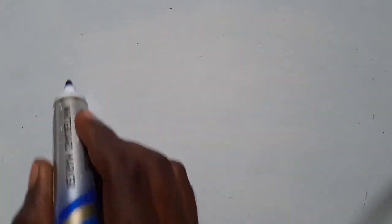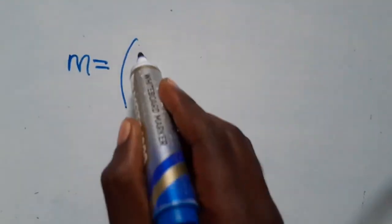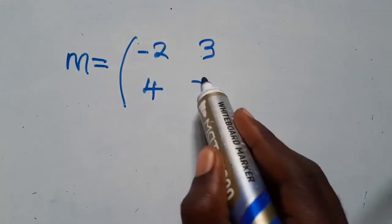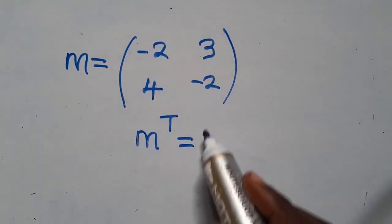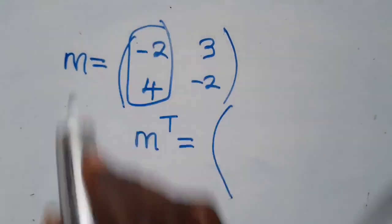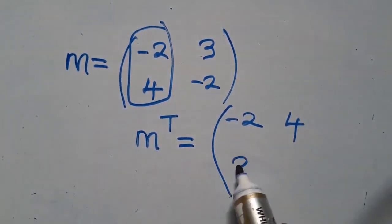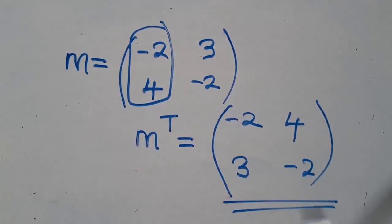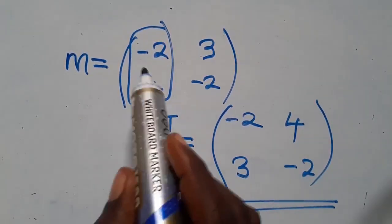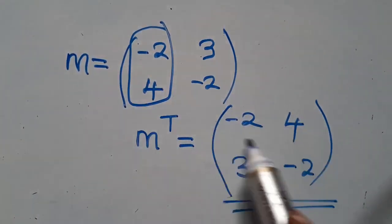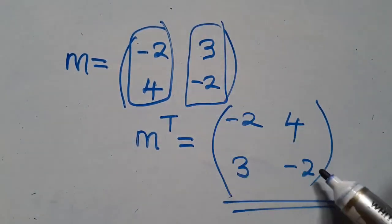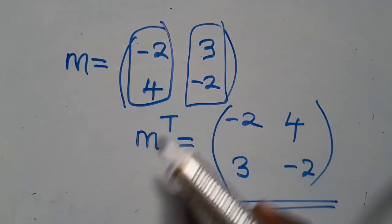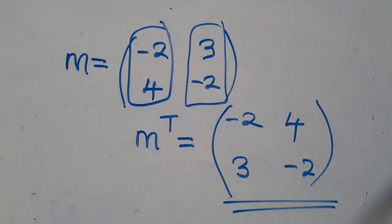The other question was very simple. M is equal to negative 2, 4, 3, negative 2. You are told to find M to the power T. The transpose changes columns to rows: negative 2, 3 becomes the first row, and 4, negative 2 becomes the second row. What was vertical becomes horizontal. That one was very simple — I believe we all understood that part with no challenges.